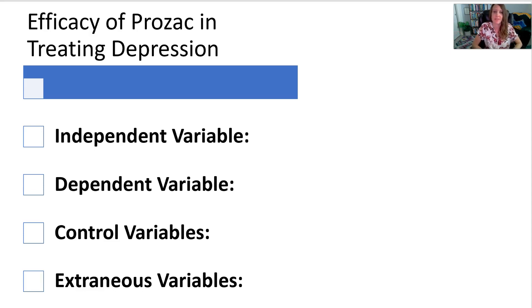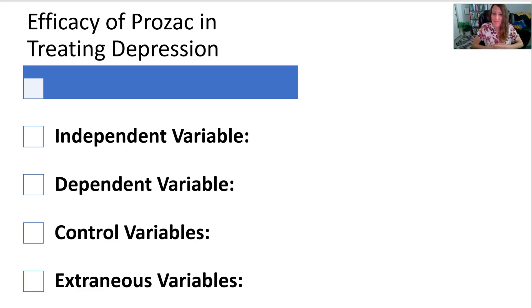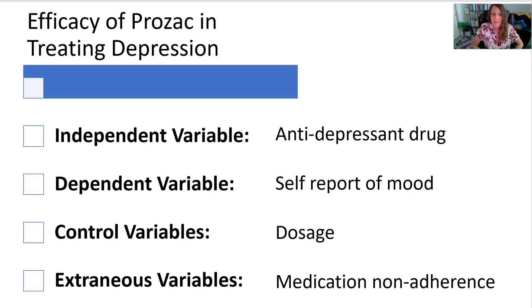Moving to a social science perspective, let's look at medications. There are often trials to determine how effective medications are compared to a placebo, no treatment, or an alternative treatment like cognitive behavioral therapy. Imagine we're doing a trial to measure how effective the medication fluoxetine — Prozac — is in treating major depressive disorder. Pause the video and jot down what you think the independent, dependent, control, and extraneous variables might be.